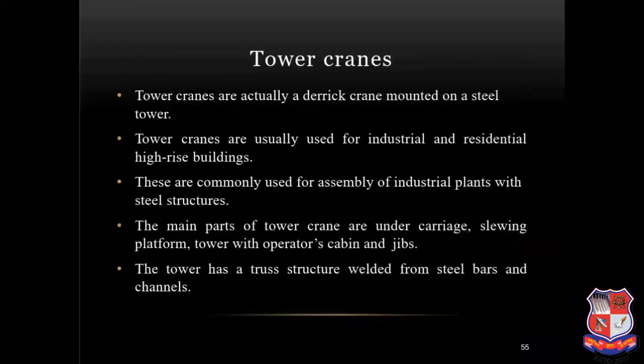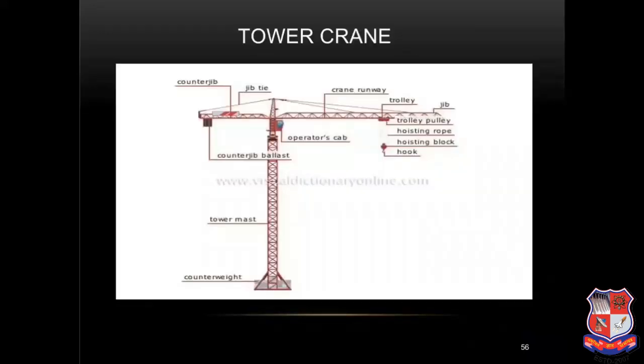Tower cranes are actually derrick cranes mounted on a steel tower. Tower cranes are usually used for industrial and residential high-rise buildings, and are commonly used for assembly of industrial plant with steel structure. The main parts of tower cranes are the undercarriage, slewing platform, tower with operator's cabin and jib. The tower has a truss structure welded from steel bars and channels. Here you can see a schematic diagram of tower cranes with each and every component shown.